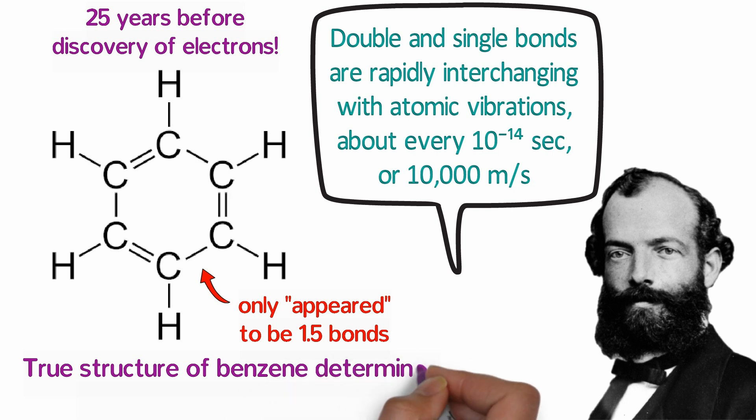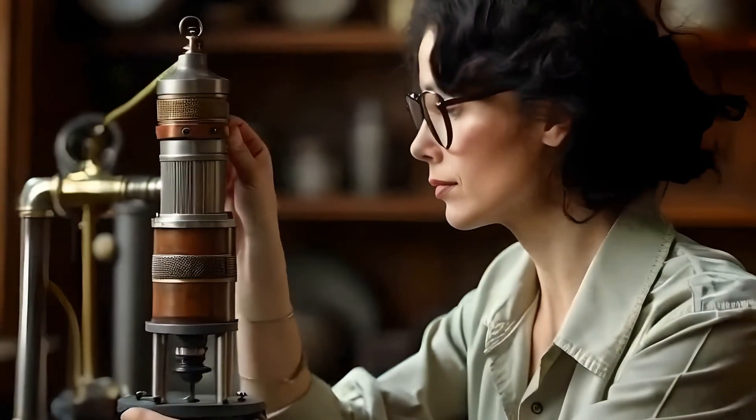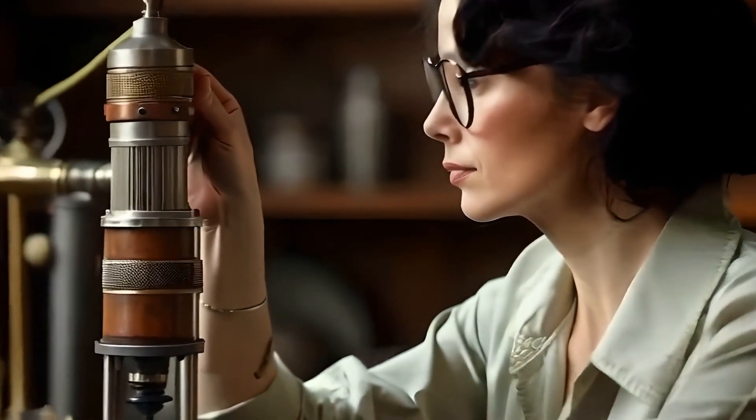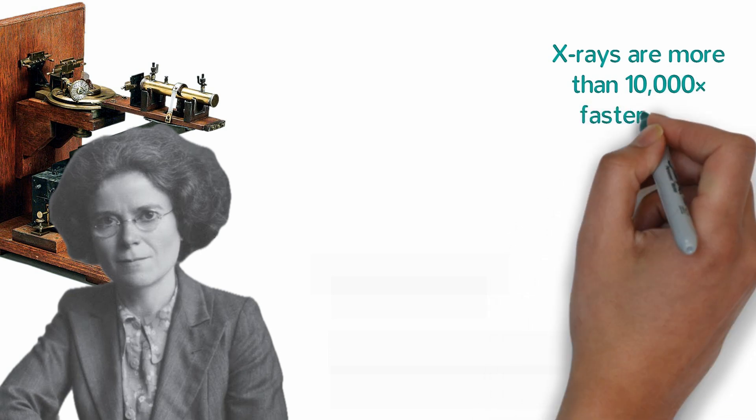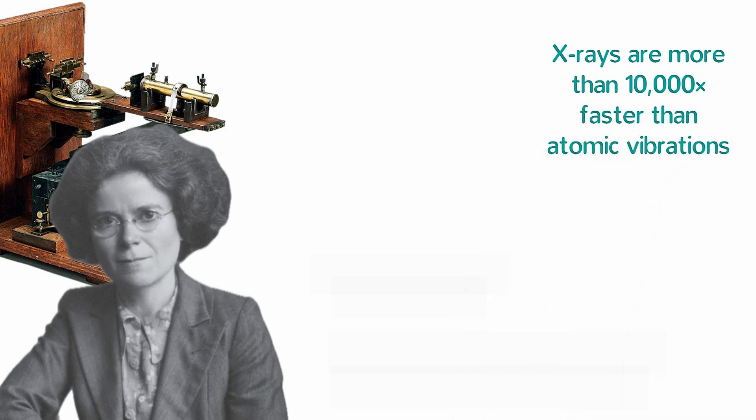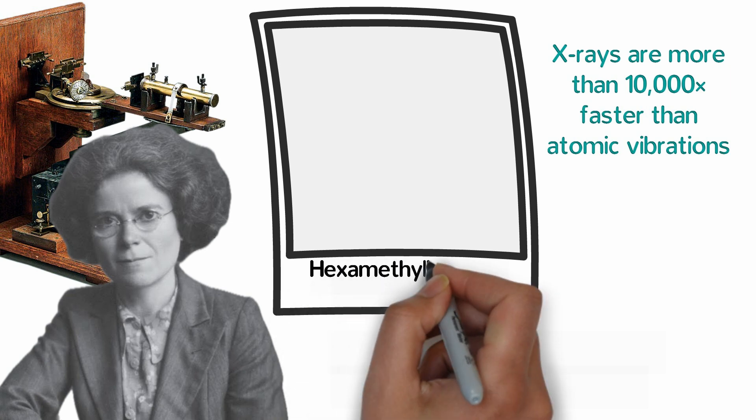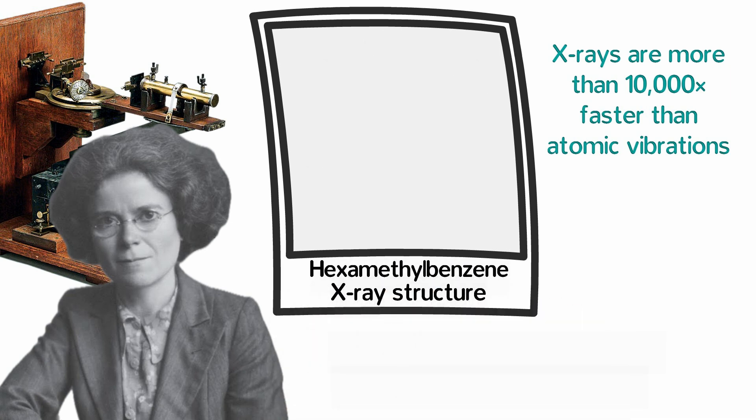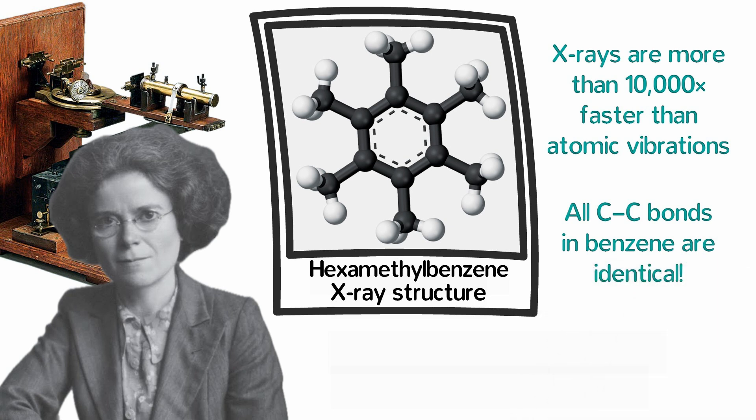The structure of benzene was finally elucidated in 1929 when Kathleen Lonsdale used x-ray diffraction to determine the locations of all the atoms in hexamethylbenzene. Because x-rays travel at the speed of light, which is much faster than atoms move, the x-ray structure would be a snapshot in time. That snapshot revealed that benzene is a flat, regular hexagon and all the carbon-carbon bond lengths are identical.